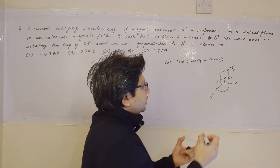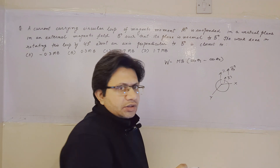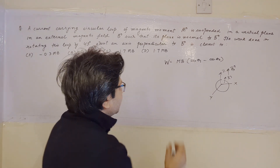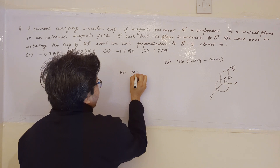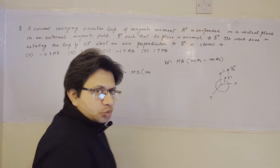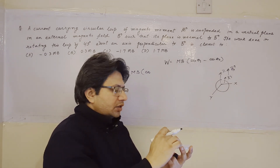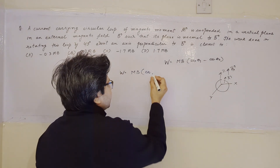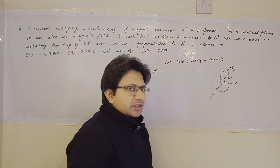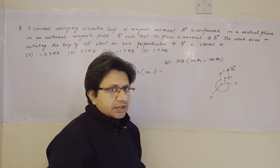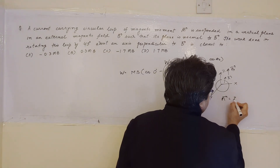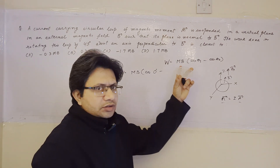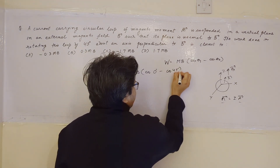When the coil is moved by 45 degrees, there is a change in angle between the area vector and vector B. In the initial position, the area vector is along z and B is also along z, so θ₁ equals 0 degrees. After rotation, the angle between the area vector and B becomes 45 degrees, so θ₂ equals 45 degrees.